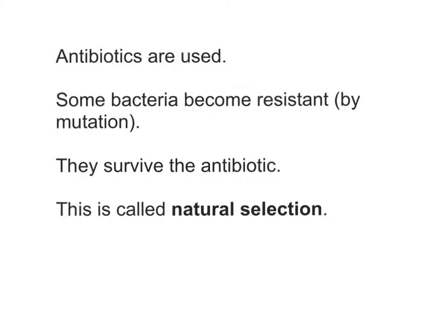To summarise what we've learnt in this section: when antibiotics are used, some bacteria might become resistant through mutation — not all mutations are, but some are resistant to antibiotics, so these bacteria survive. This process is called natural selection, and it means that the resistant bacteria might thrive and form a whole new type of bacterium resistant to antibiotics. We've also learnt that bacteria that are super-resistant, like MRSA, are a really big danger to us.